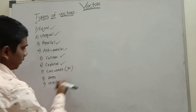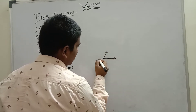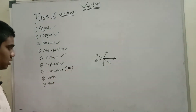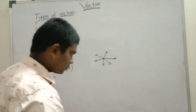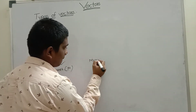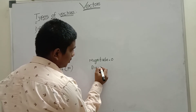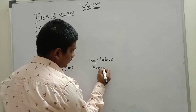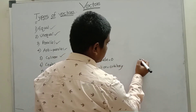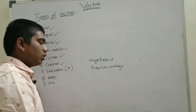Concurrent vectors: from a single point, n number of vectors starting is called concurrent vectors. Zero vector means whose magnitude is zero and direction is arbitrary. This is called zero vector.